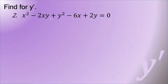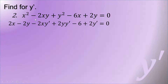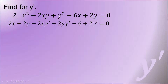Second example: x squared minus 2xy plus y squared minus 6x plus 2y equals 0. Differentiating x squared gives 2x. For the term negative 2xy, which has two different variables, we apply the product rule: the first term is negative 2x and the second is y. Differentiating gives negative 2y prime minus 2x y prime. Differentiating y squared gives 2y y prime. The differential of negative 6x is negative 6, and the differential of 2y is 2y prime, all equal to 0.